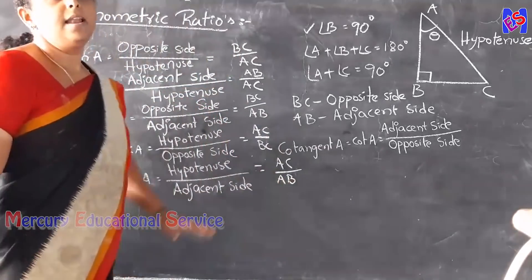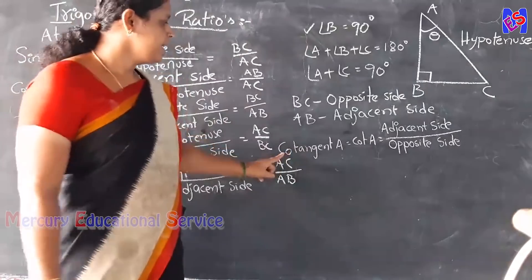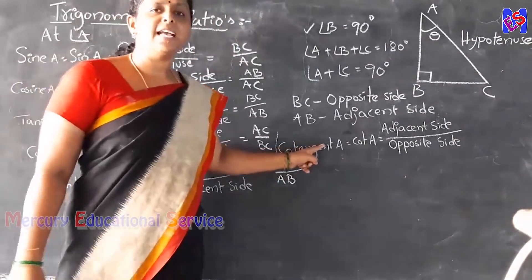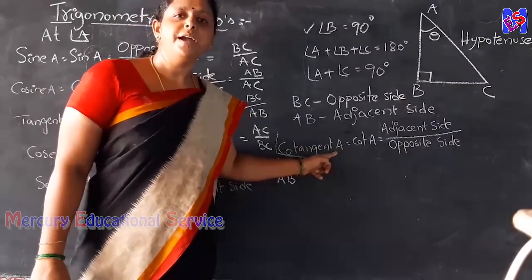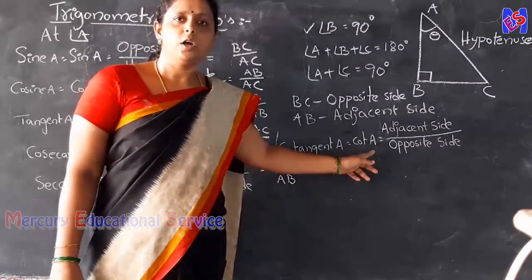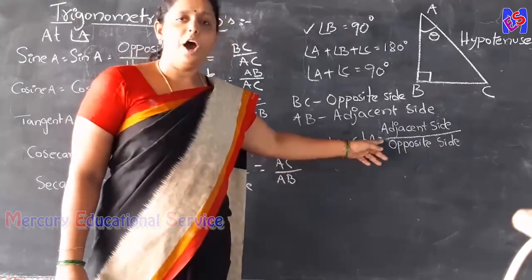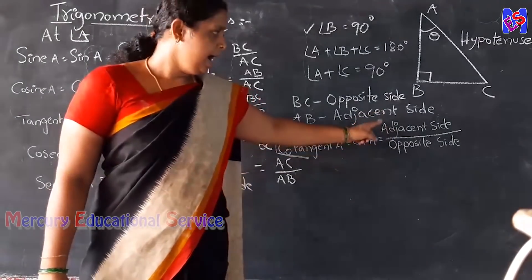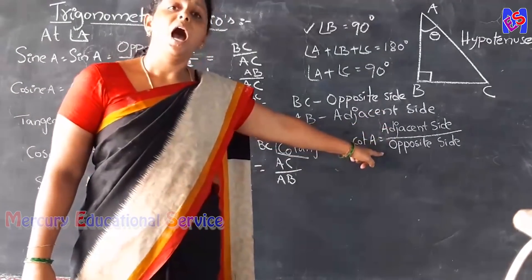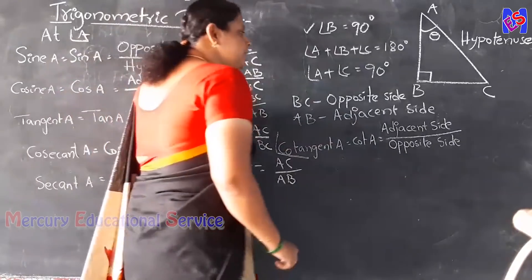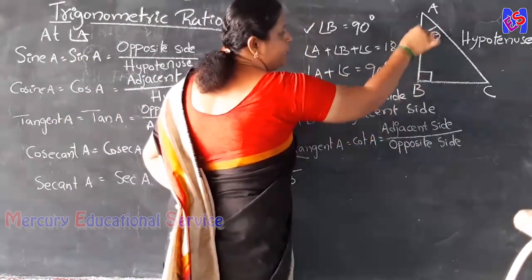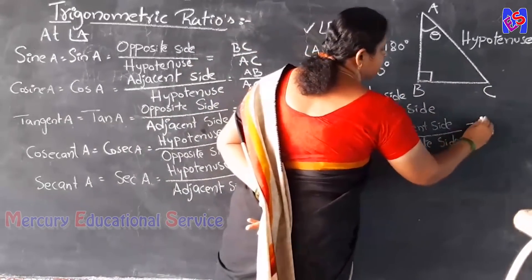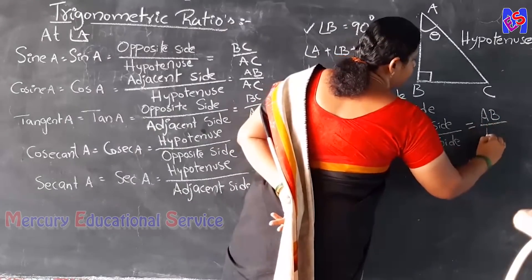The last ratio is cotangent A, written in short form as cot A. The formula of cot A is adjacent side divided by opposite side. The adjacent side is AB and the opposite side is BC. So cot A equals AB by BC.